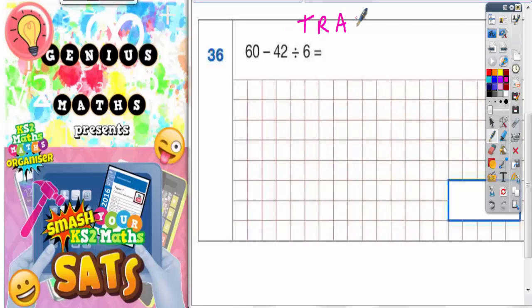Now the first thing to point out here is that there's a very large trap that some of you might fall into. 60 minus 42 would be 18 and 18 divided by 6 would be 3 and some of you will put 3 in there. However, that is wrong so we are not going to do it like that.